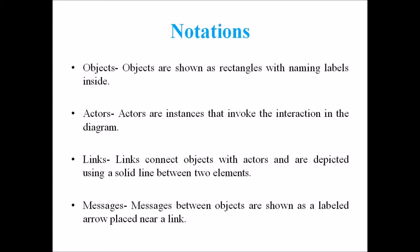The third notation is links. The link is an instance of association which associates the objects and actors. It portrays a relationship between the objects through which the messages are sent. It is represented by a solid line. The link helps an object to connect with or navigate to another object such that the message flows are attached to links.